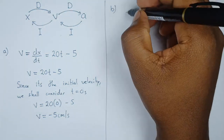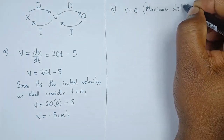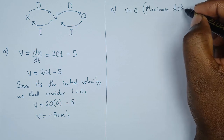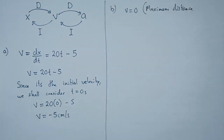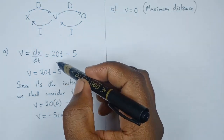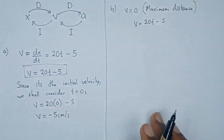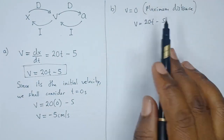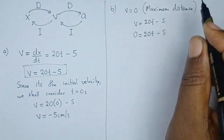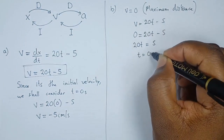For this part of the question, it's important to note that the maximum distance will take place on one condition: the velocity must be equal to 0. So we set velocity V equals 0. Using the velocity equation 20t minus 5 equals 0, we solve: 20t equals 5, giving t equals 0.25 seconds.